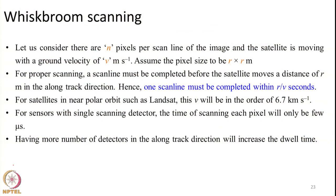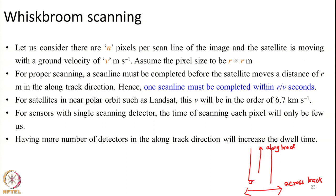Let us consider there are n pixels per scanline. The satellite is moving in the along-track direction and the scanner scans in the across-track direction. Assume the satellite has a ground velocity of v meters per second and the pixel size is r by r meters.